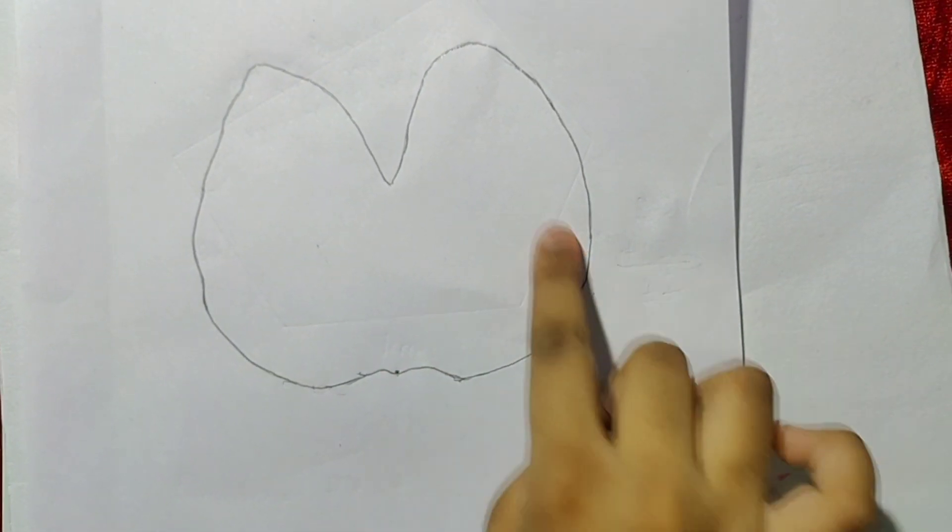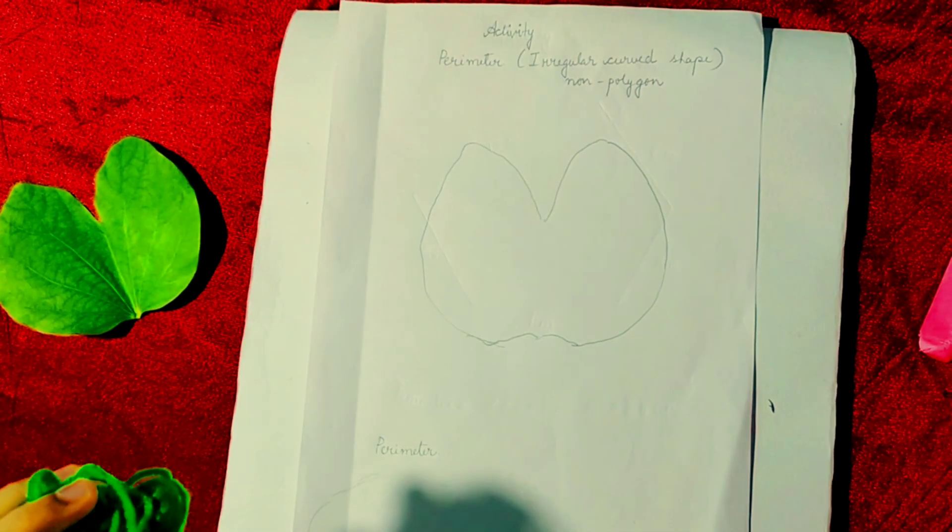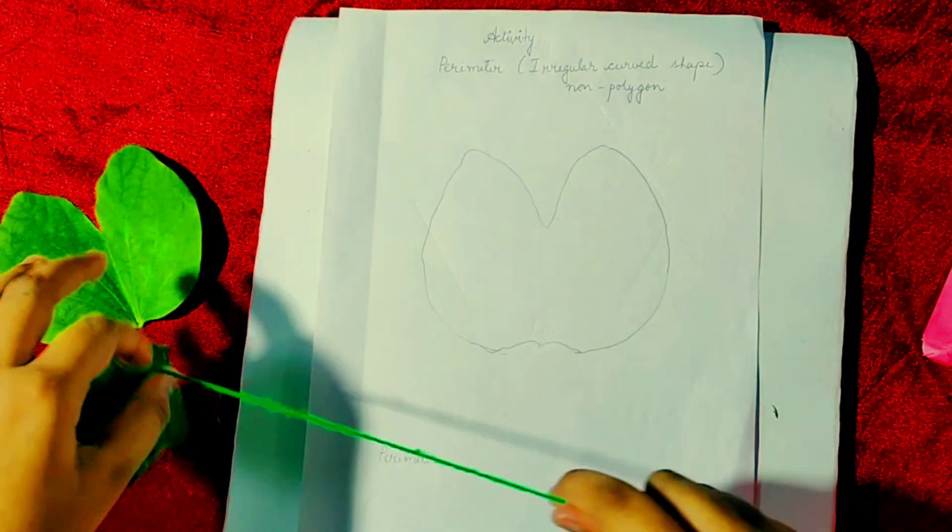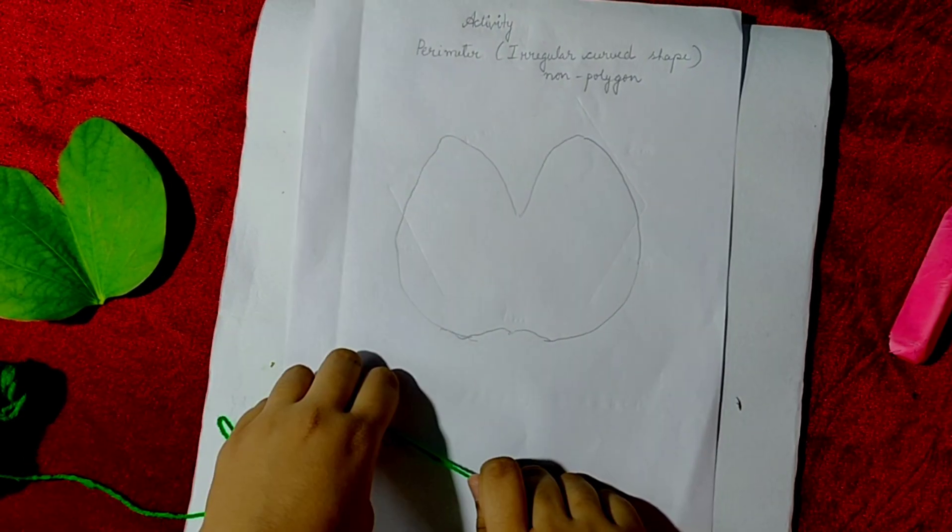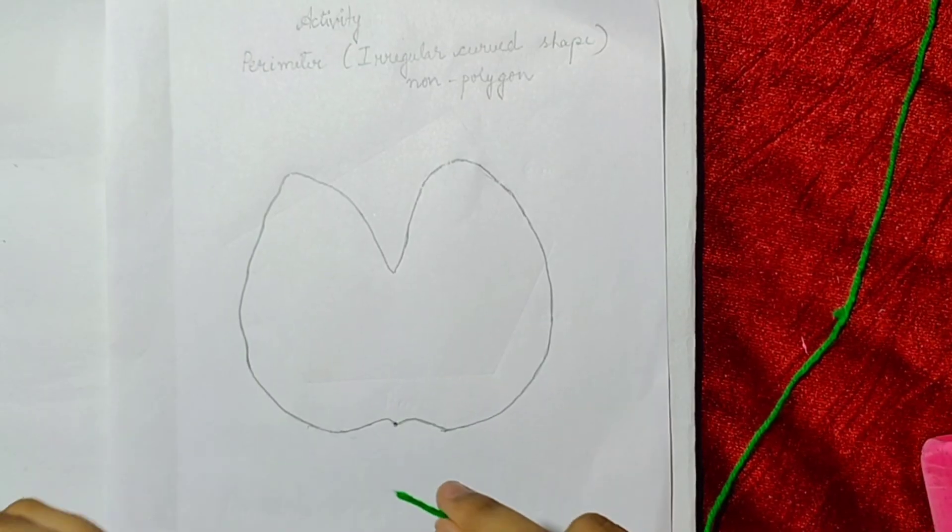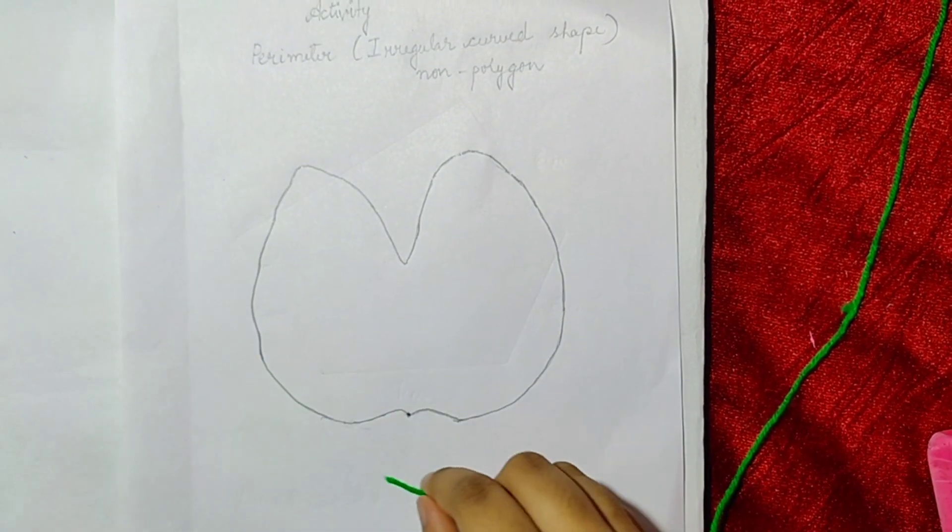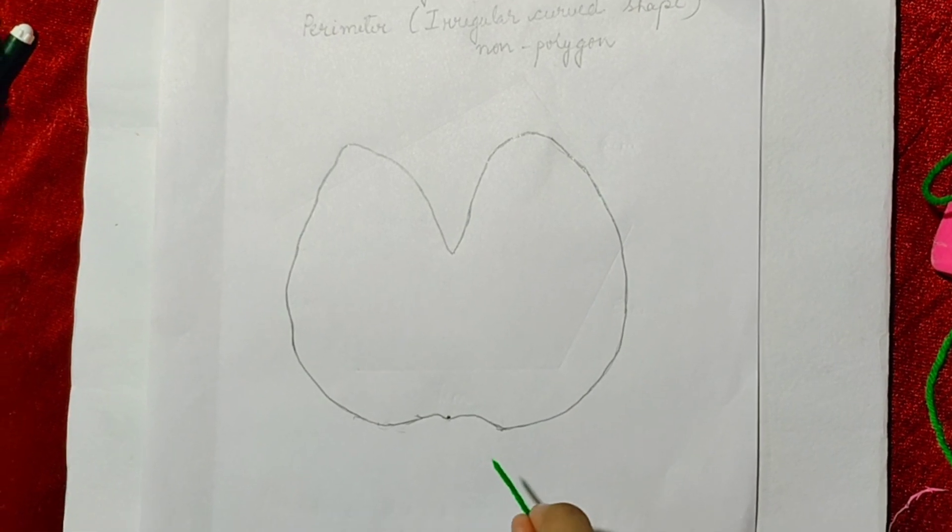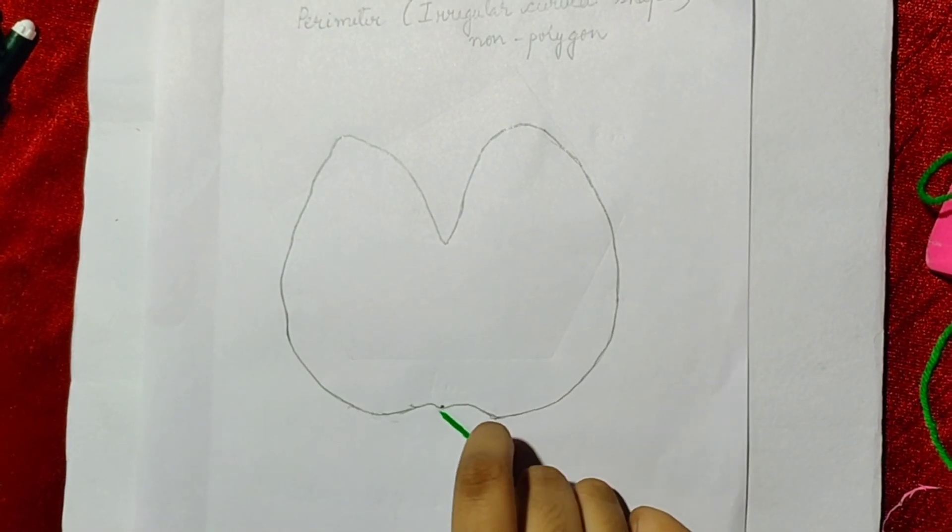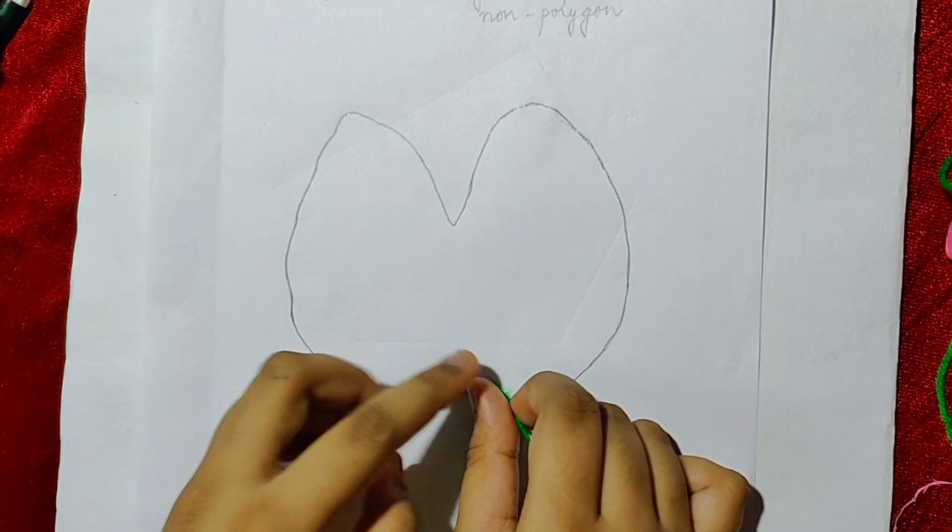Now we got a closed figure. Take a thread. I have a woolen thread here. Keep it on the outline of this figure. First you put a dot on the starting point and start keeping the end on the point where we marked.